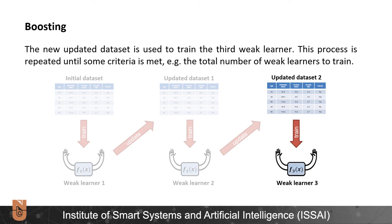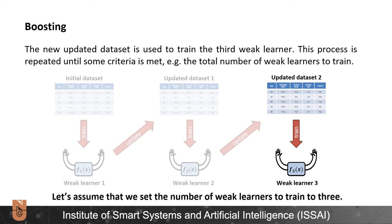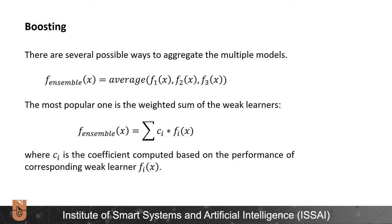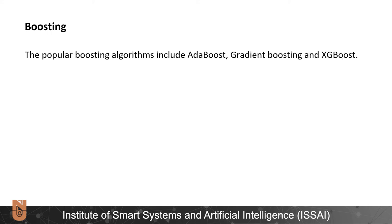This process is repeated until some criteria is met. For example, the total number of weak learners to train. In this example, let's assume that we set the number of weak learners to train to 3. There are several possible ways to aggregate the multiple models. The most popular one is the weighted sum of the weak learners, where ci is the coefficient computed based on the performance of the corresponding weak learner fi. The popular boosting algorithms include AdaBoost, GradientBoosting, and XGBoost.